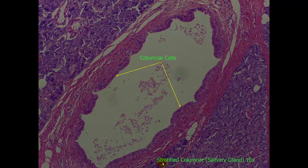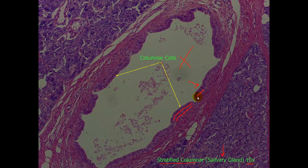The next slide is stratified columnar. This is in a salivary gland at a 10x magnification. This is our lumen, and here is our stratified columnar. One thing to note for stratified columnar: see these rows of things that look like purple dots? Those are actually the nuclei of the cells themselves. Notice how you have some space in between those nuclei. This is going to help to differentiate it from pseudostratified columnar, which I will point out in a little bit.